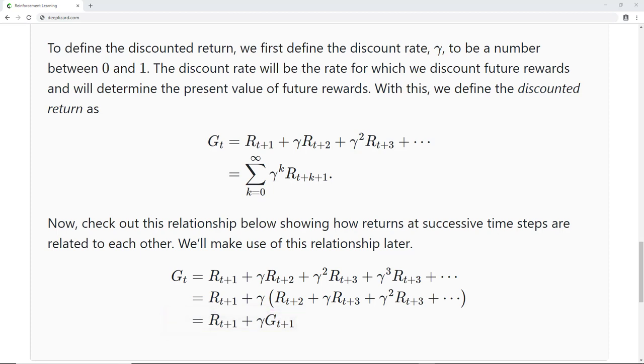On the corresponding blog for this video, we expand a bit more on the discounted return to discuss how even though the return at time t is a sum of an infinite number of terms, the return itself is actually finite. So, if you're interested in seeing that detail, be sure to go read up on that there. And while you're at it, also check out the deep lizard hive mind to view what types of perks and rewards are available for joining. Alright, we should now have a good feel for the discounted return. The main takeaway here is that it's the agent's objective to maximize the expected discounted return of rewards.